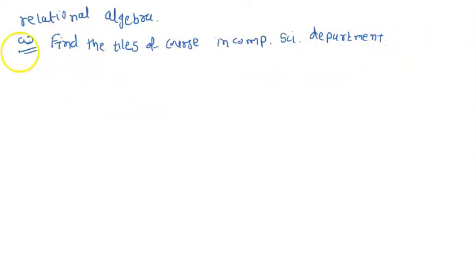First of all, relational algebra eliminates all duplicates. Here we will use the selection operator, Sigma, to select only those tuples where credit is three. Then use the projection operator to project the required attribute from the table course.